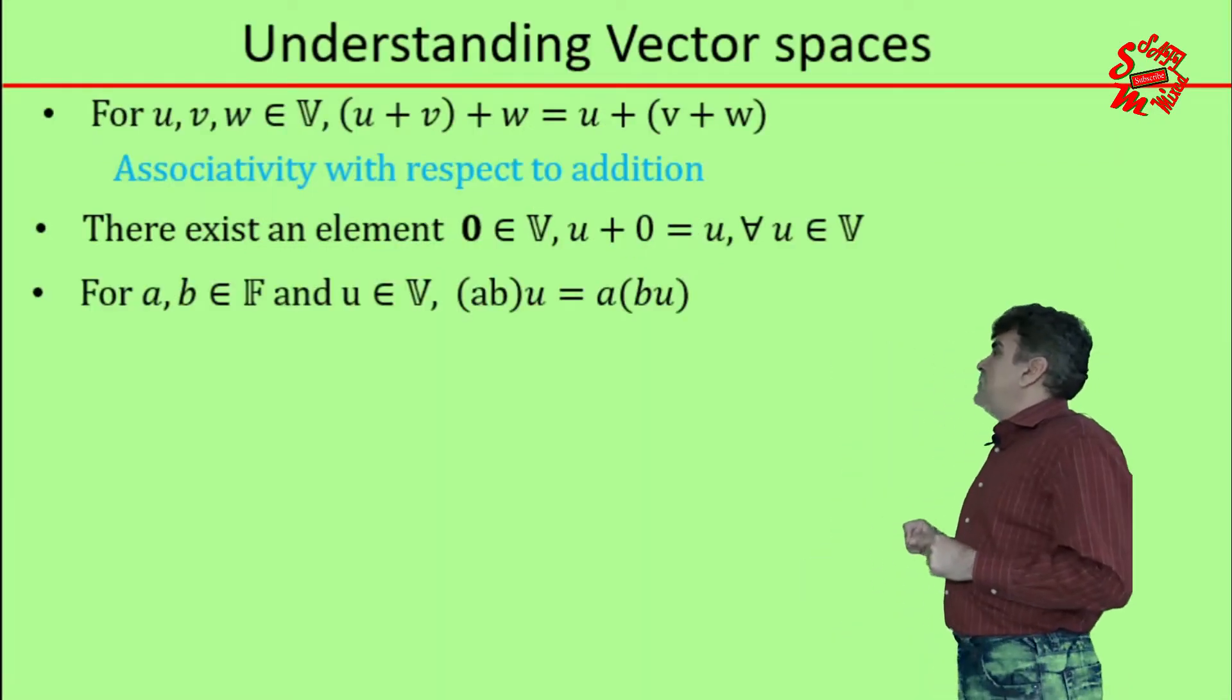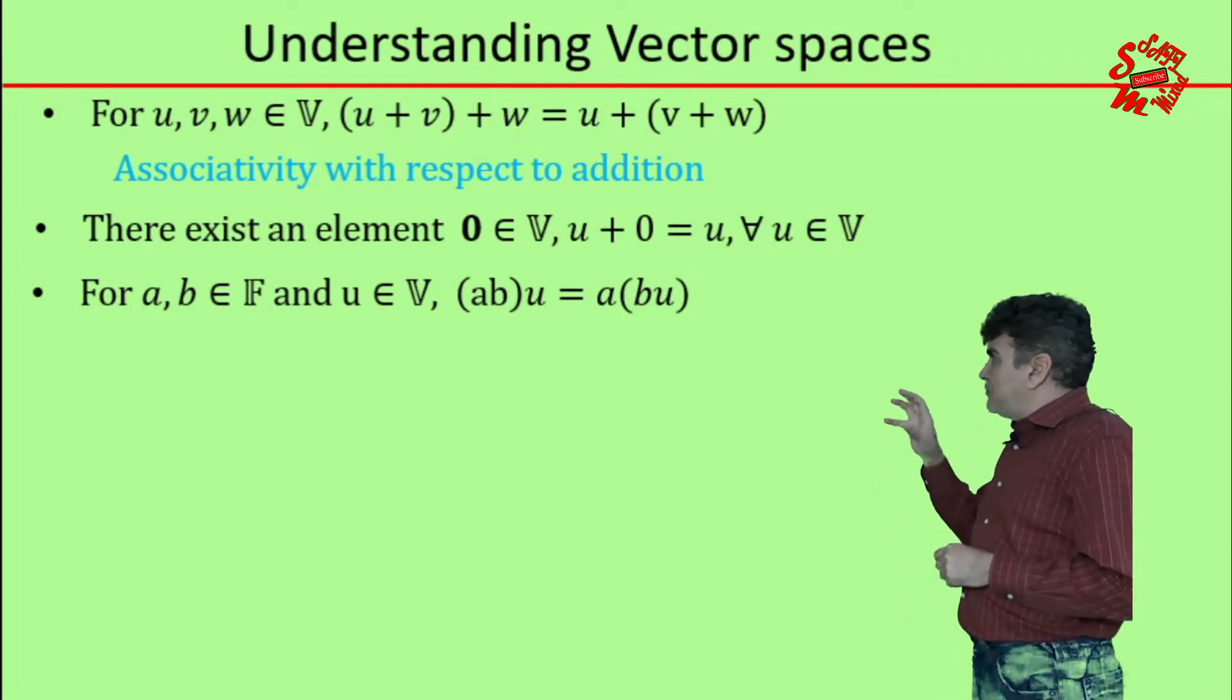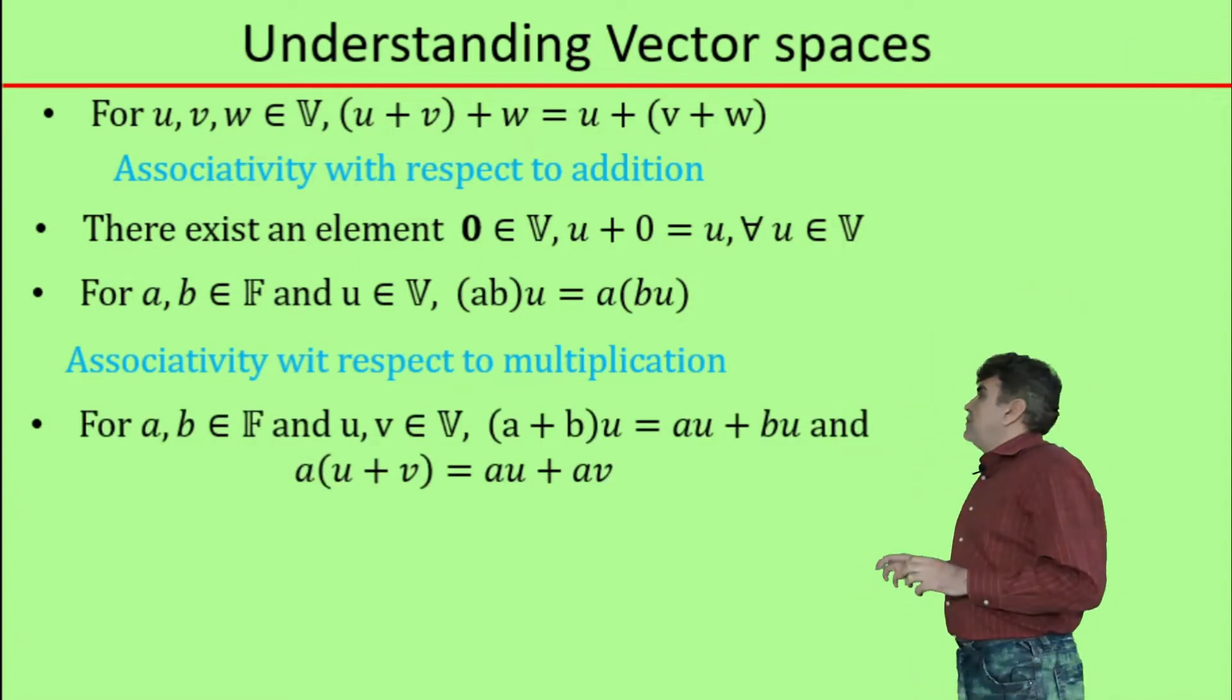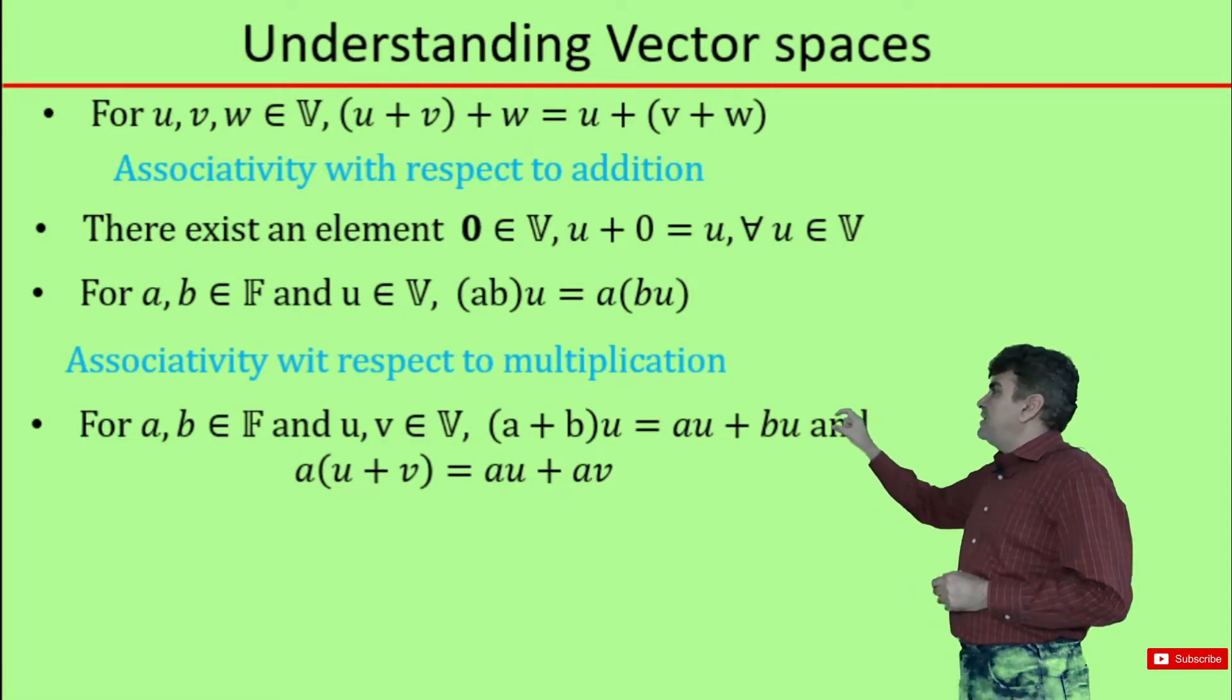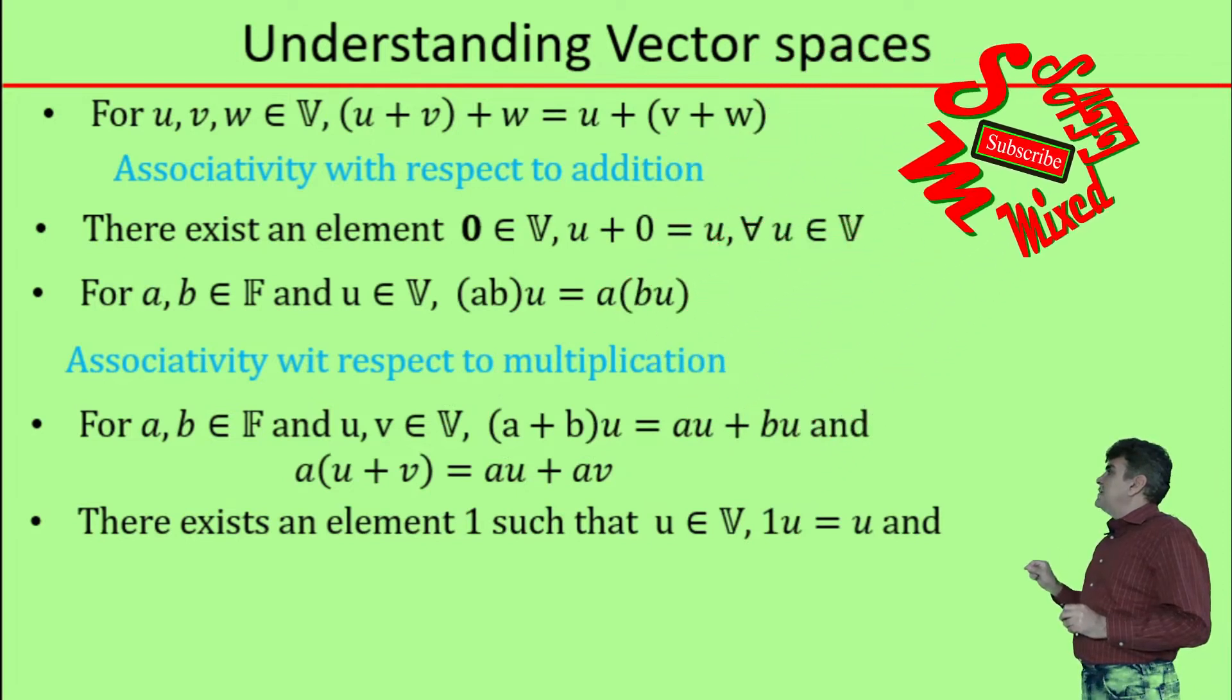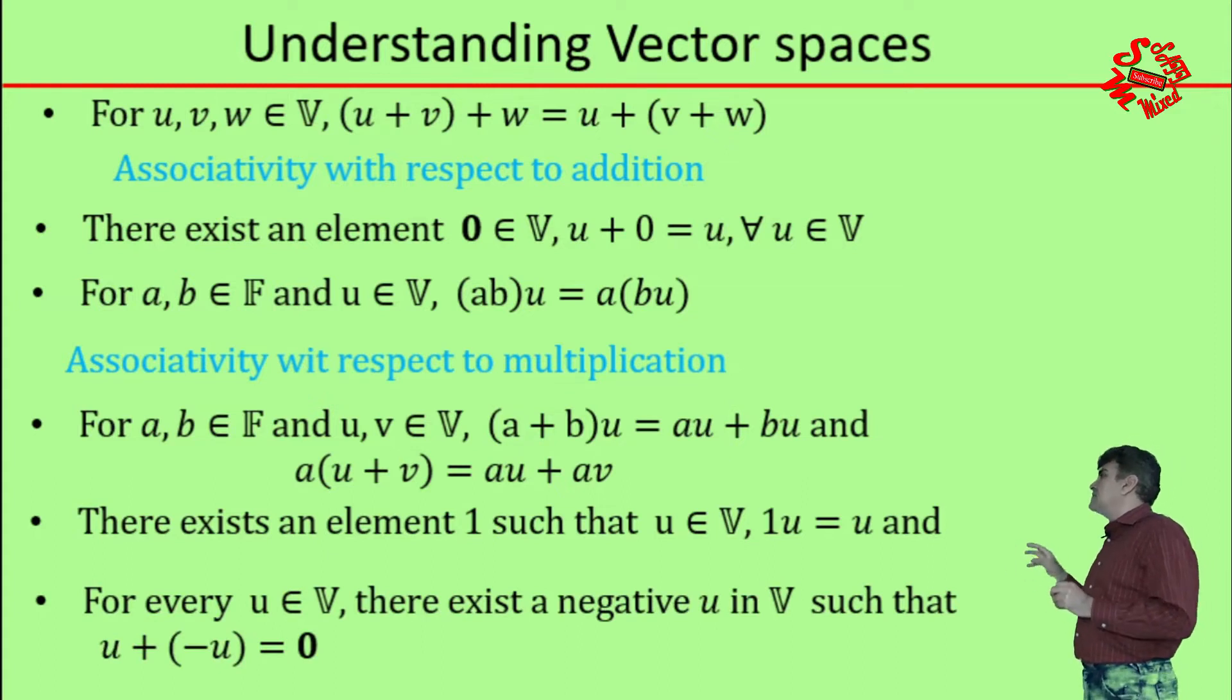For a, b belonging to field F and u belonging to space V, the associative property with respect to multiplication is obeyed. For a, b belonging to F and u, v belonging to V, this property of addition and multiplication is simultaneously obeyed. There exists an element 1 such that for u belonging to V, when 1 is multiplied with u, it always reproduces the same element of the space.